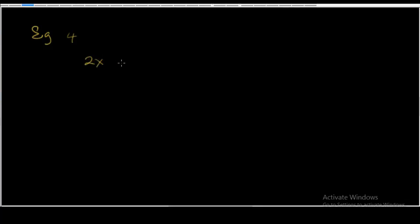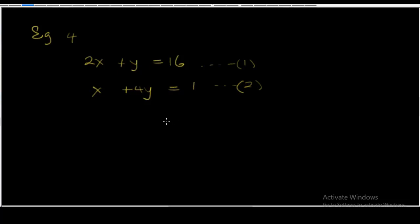Now let's move to example 4. We have 2x plus 4y equals 16 — equation 1 — and x plus 4y equals 1 — equation 2. We're going to find y and eliminate x. To do that, we're going to multiply the first equation by 1 and the second equation by 2.